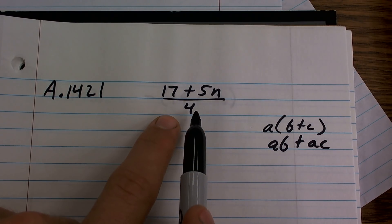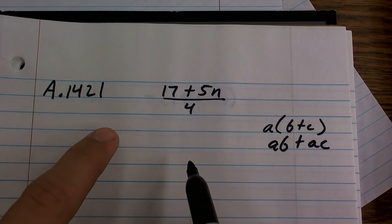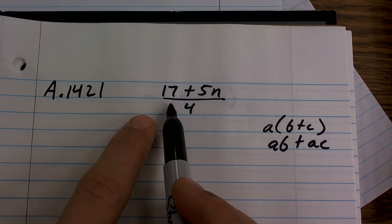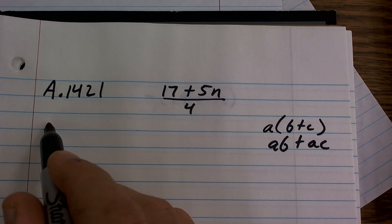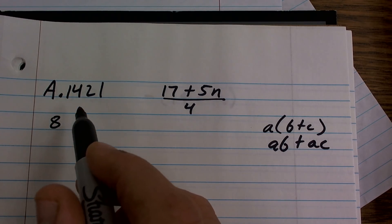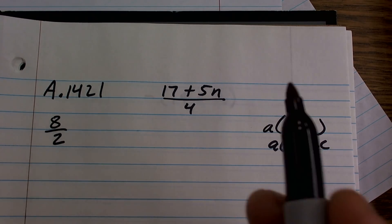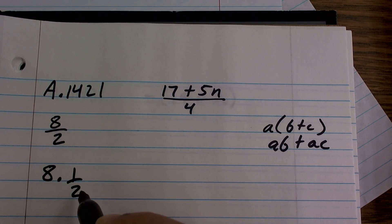So dividing by 4 is pretty much the same thing as multiplying by 1 fourth. So you could say pretty much what I'm doing is, let's take a look at it this way. If I said 8 divided by 2, that's the same thing as 8 times 1 half, right?